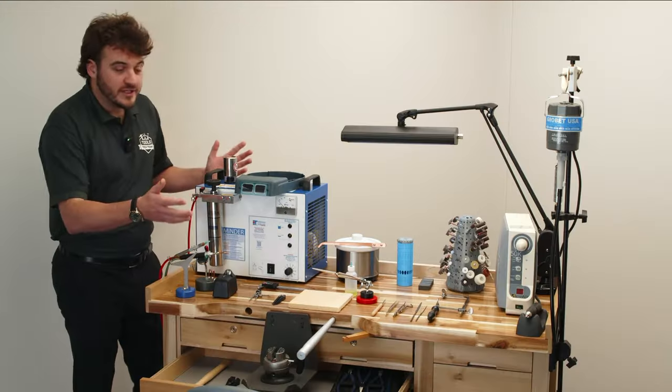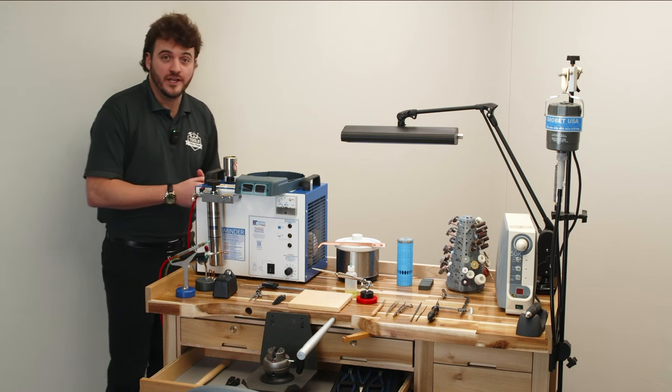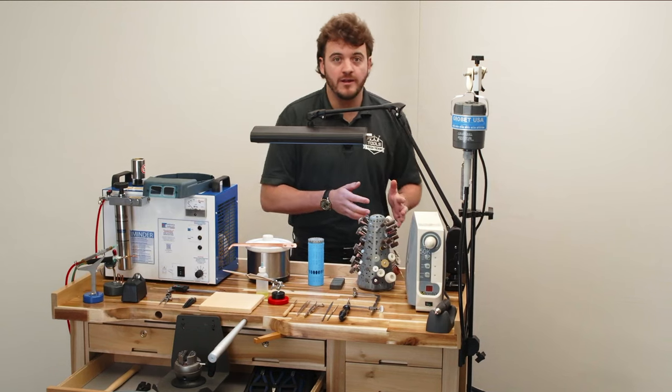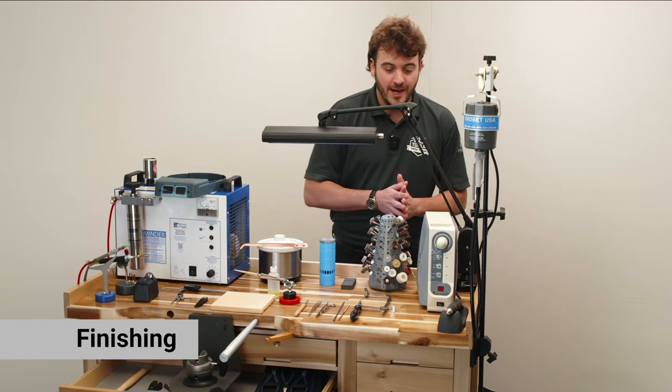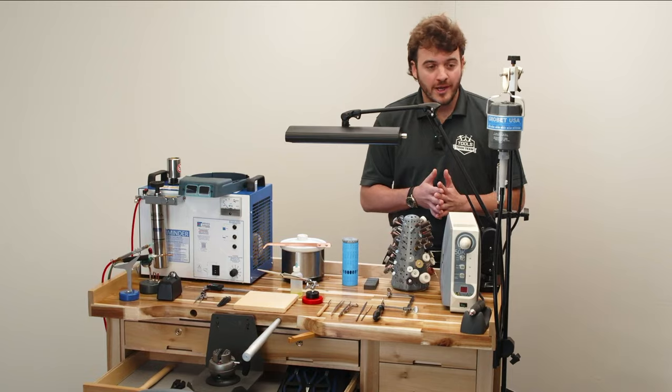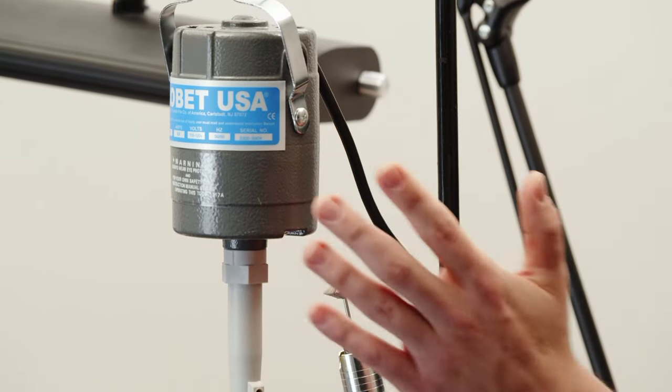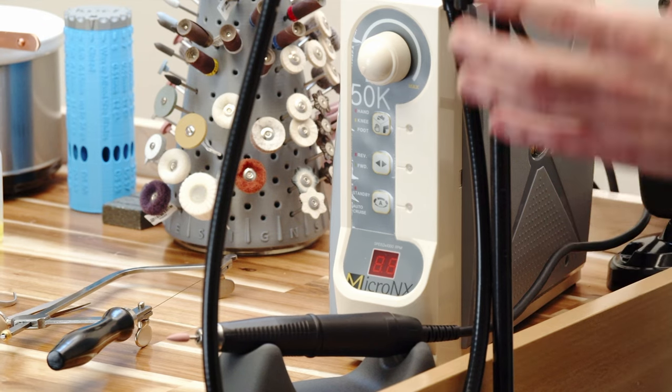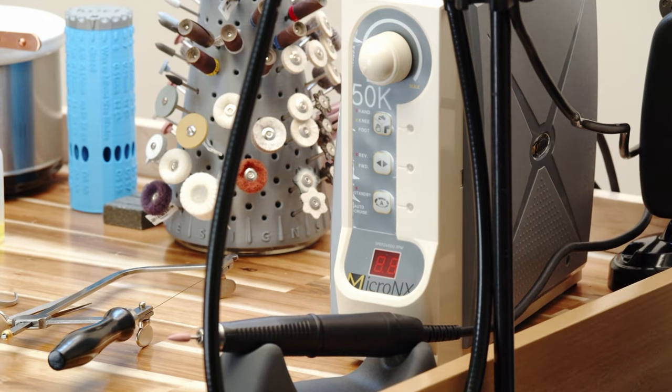So at this point, we've really talked about the tools and equipment that you're going to need to perform the repair itself. Really, we can focus here on the prep and finish work. At this point, you're going to need some type of a rotary hand tool. So here we have our flex shaft or our micromotor. Flex shafts are a little bit more cost effective, but micromotors are going to be lighter, a little bit easier to use overall.